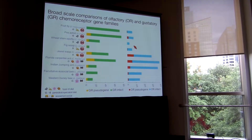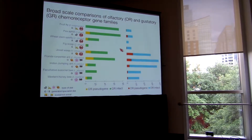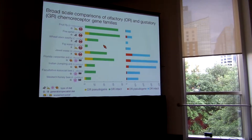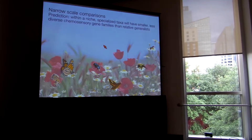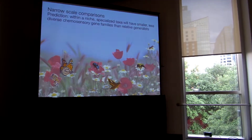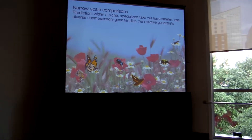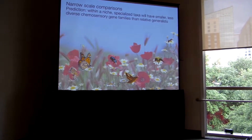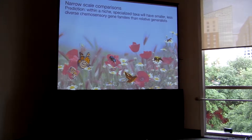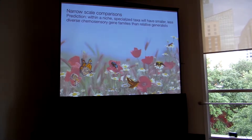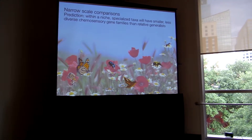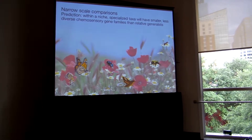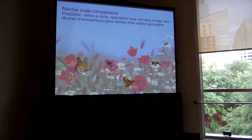This same lack of pattern is also seen if you compare these insect herbivores. So it's possible that chemosensory genes are really sensitive to niche and are really labile, such that comparisons between relatively diverse taxa aren't going to be very helpful. In which case, it may be better to compare taxa that are closely related and in the same feeding guild, which is my second level of comparison.